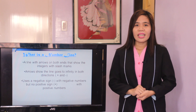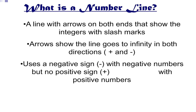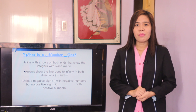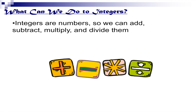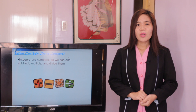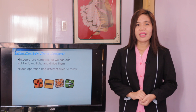It uses a negative sign with negative numbers, but no positive sign with positive numbers. Zero is the origin and is neither negative nor positive. So the question is, what can we do to integers? Integers are numbers, so we can add, subtract, multiply, and divide them. Each operation has different rules to follow.